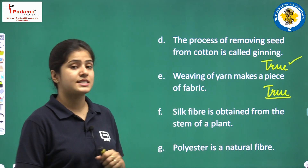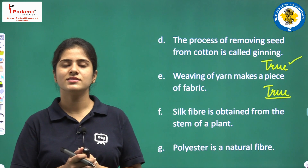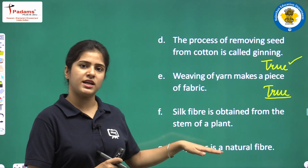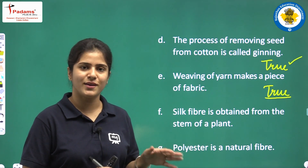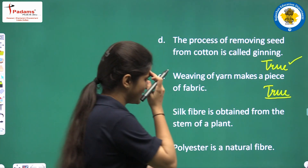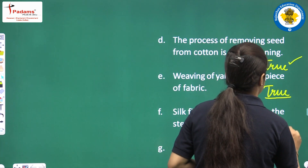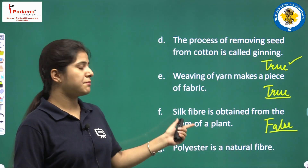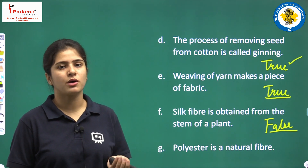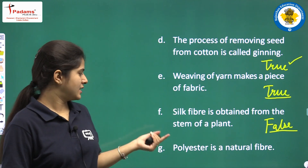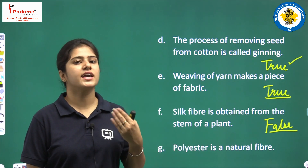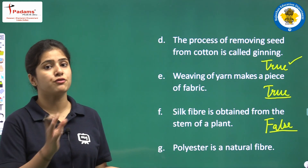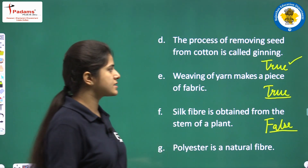Next statement: Silk fiber is obtained from the stem of the plant. I know silk is an animal fiber, but this says it is obtained from the stem of the plant — that is wrong, so the answer is false. Silk is an animal fiber, whereas jute is obtained from the stem of the jute plant. Last statement: Polyester is a natural fiber. Polyester is obtained synthetically, not from plants or animals, so this is false.